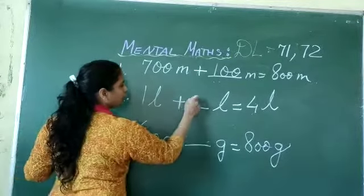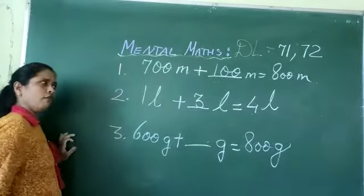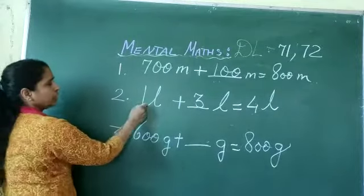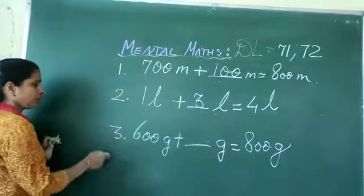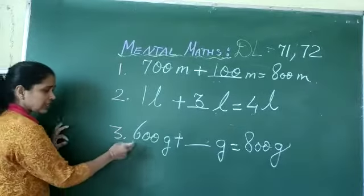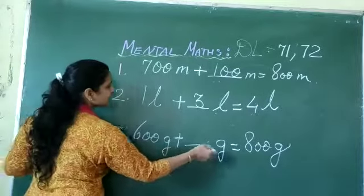1 plus 3 equals 4. 1 liter plus 3 liter equals 4 liter. Question number 3: 600 grams plus dash grams equals...